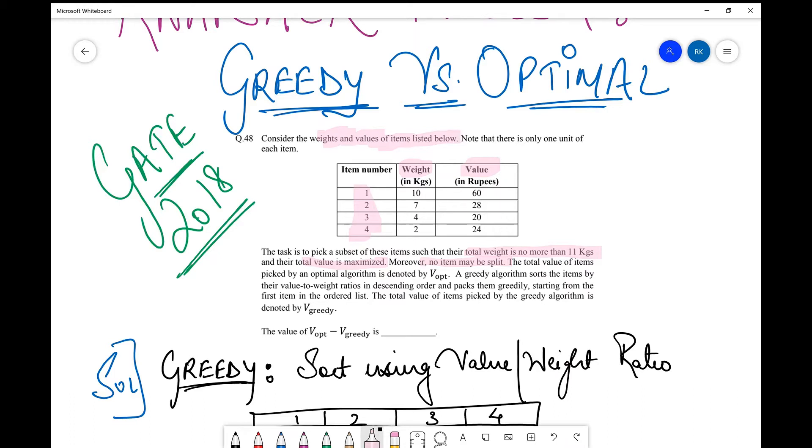Then they say the total value of items picked by an optimal algorithm is denoted by V_opt. A greedy algorithm sorts the items. Now they have specified the greedy algorithm in brief over here in the question. A greedy algorithm sorts the items by their value to weight ratios in descending order and packs them greedily starting from the first item in the ordered list. The total value of the items picked by the greedy algorithm is denoted by V_greedy.